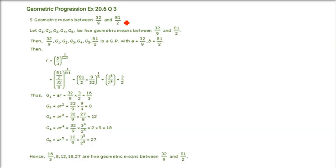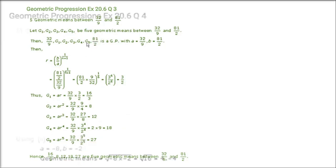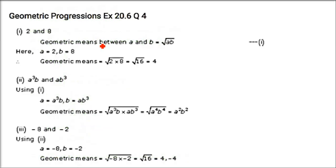Next: insert 5 geometric means between 32/9 and 81/2. Using R = (B/A)^(1/(N+1)) with N = 5, we get R = 3/2. A is already known, so multiply: AR, AR², AR³, AR⁴, AR⁵. The 5 geometric means come out with the last being 27.